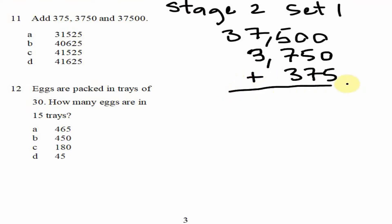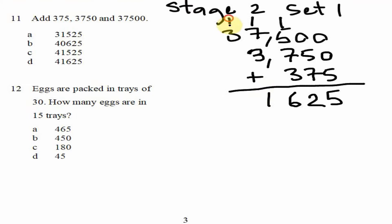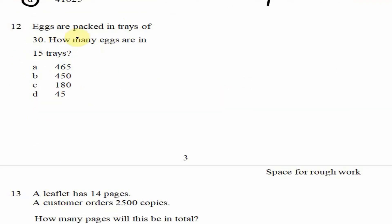Adding them now: 5 plus 0 plus 0 is 5. 7 plus 5 is 12, carry the 1. 3 plus 7 is 10, plus 1 is 10, plus 5 is 15, plus 1 is 16 — write 6 carry 1. 3 plus 7 is 10, plus 1 is 11. So our answer is 41,625, which is option D.